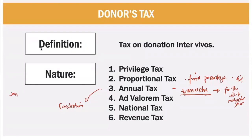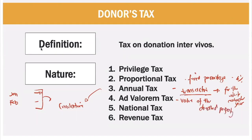Donor's tax is an annual tax because we do not look at it per transaction, but we take into account your donations for the whole calendar year on a cumulative basis. Although payment of the tax is per transaction, computation is annual. For example, if there is a January donation paid 30 days after, and a February donation follows, we get the cumulative donation because it is an annual tax. It is also an ad valorem tax based on the value of the donated property, a national tax levied by the national government, and a revenue tax for fiscal purposes.